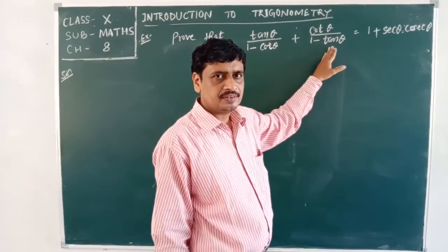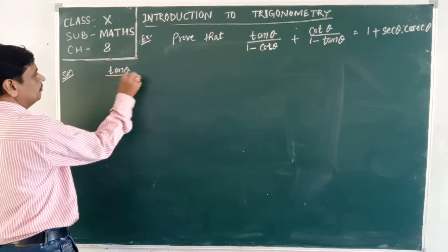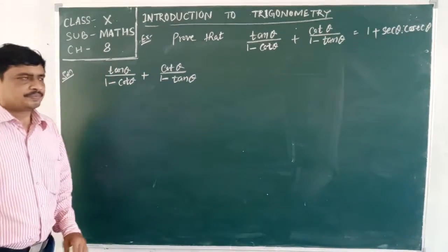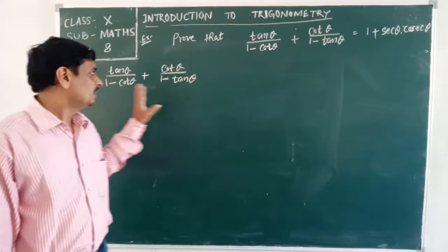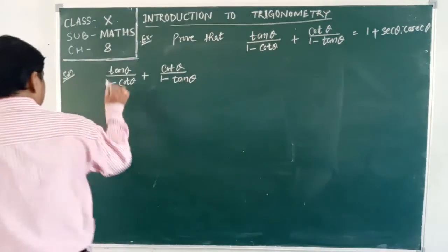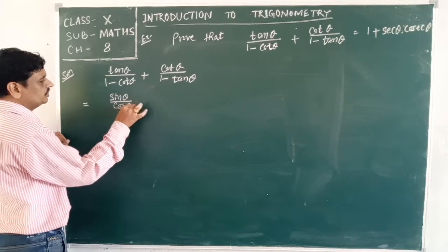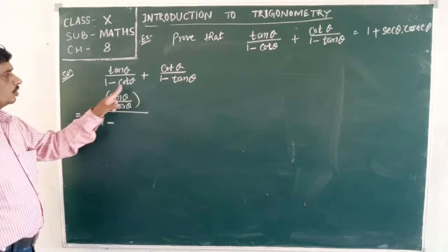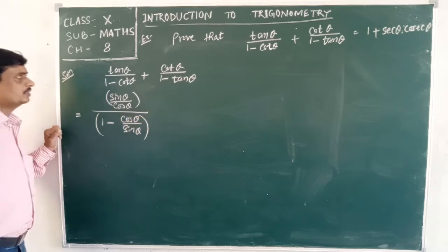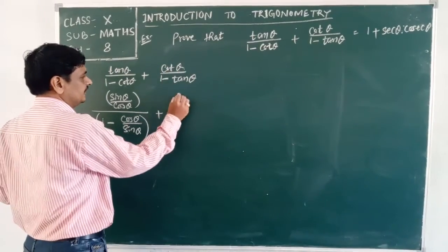We will take the left-hand side of the statement and show it equals the right-hand side. LHS = tan θ/(1 − cot θ) + cot θ/(1 − tan θ). There are two ratios, tan and cot. We convert all ratios to sine and cos: tan θ = sin θ/cos θ, and cot θ = cos θ/sin θ.